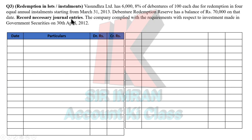The company complied with the requirement of investment in government securities on 30th April 2012. Even if this statement is not given, you have to make 15% investment. In Questions 1 and 2, the lump sum method allowed 15% directly on Rs. 6 lakhs. But since this is an installment question, you divide Rs. 6 lakhs over 4 years: Rs. 1,50,000 per installment.